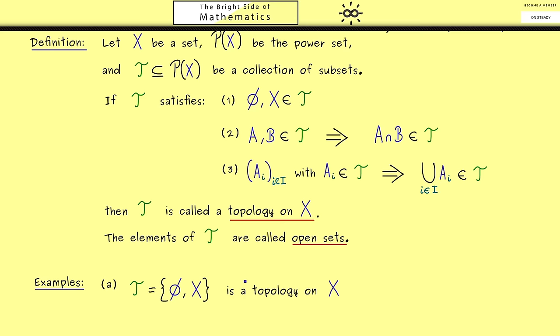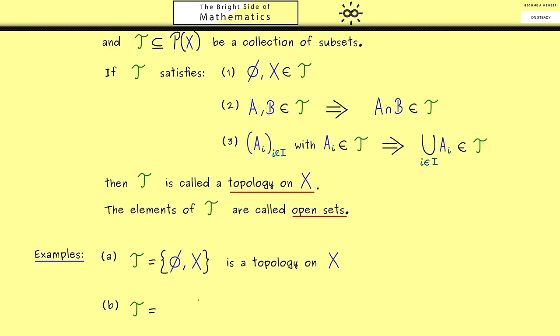Okay, now you might already know we can also do the other extreme, which means we have the topology where all the subsets are open. Of course, the power set of X is a topology on X because there is no way to violate one of these rules. The power set just contains all the subsets. And now in this topology, all these subsets are open sets. Therefore, we often call it the discrete topology.